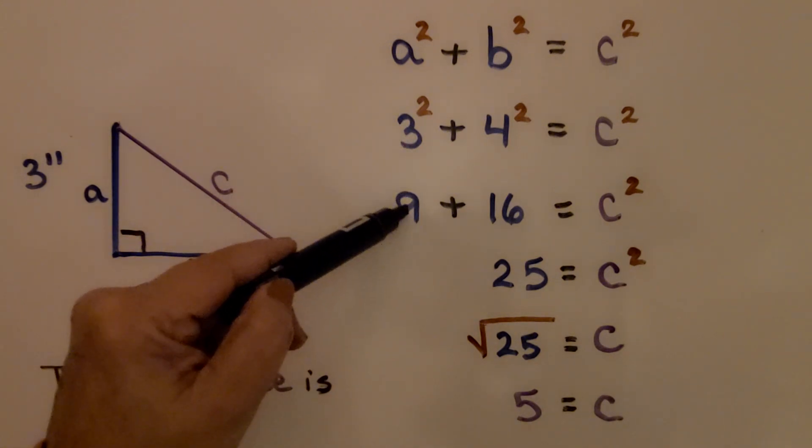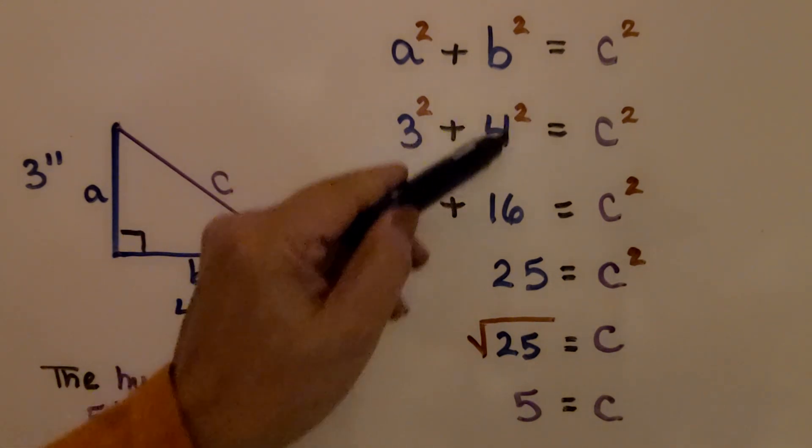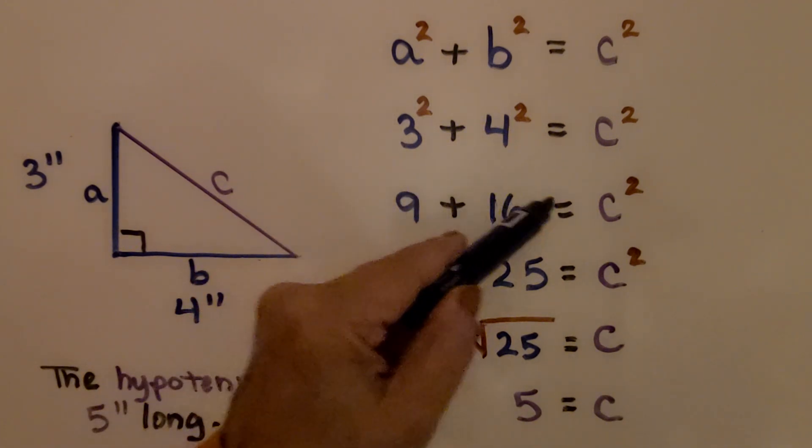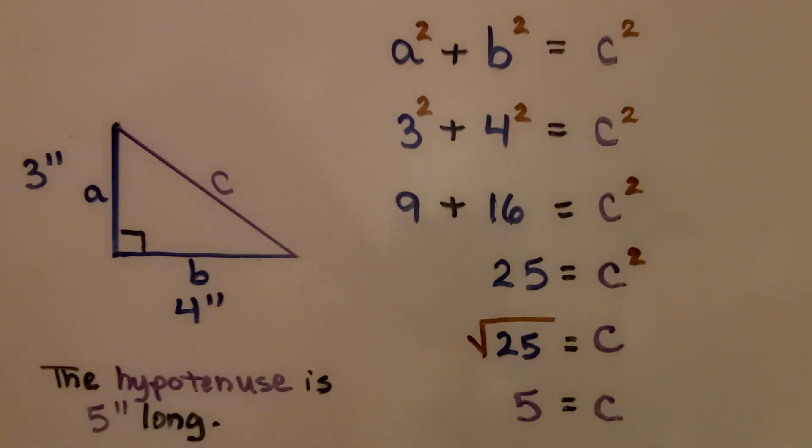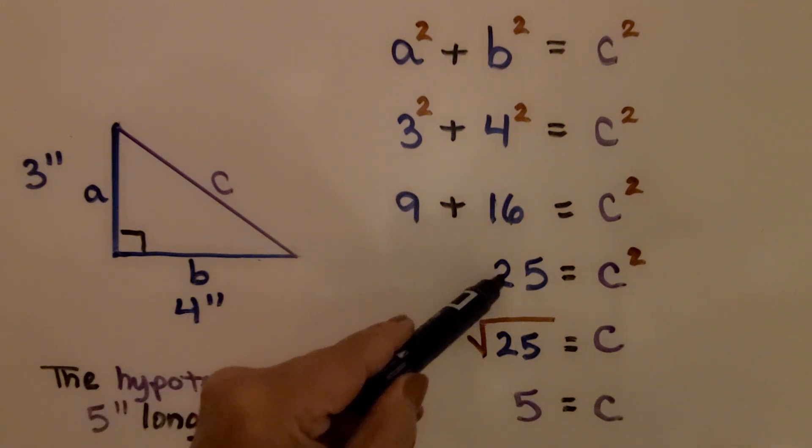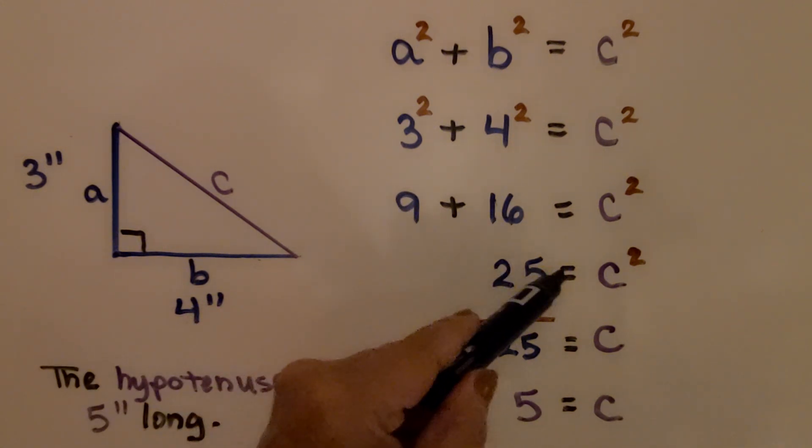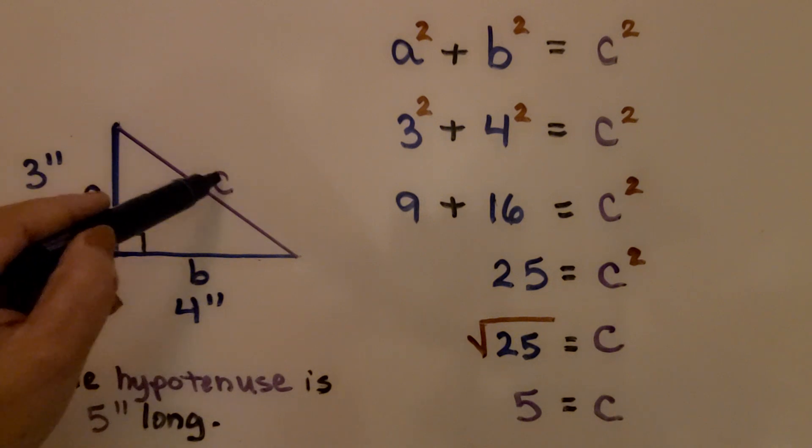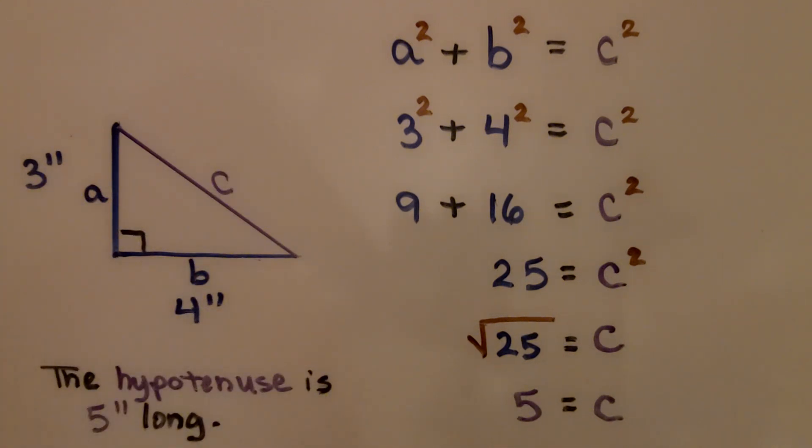Three squared is nine, three times three. Four squared is 16, four times four. We have nine plus 16 is equal to c squared. Nine plus 16 is 25. That means 25 is equal to c squared. We remove this exponent and put a radical sign around the 25 to find the square root of 25. That's five. Five times five is 25. That tells us that c is five inches long.